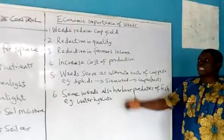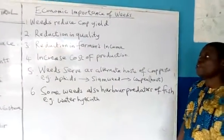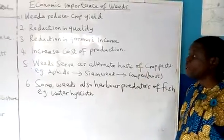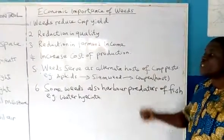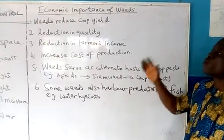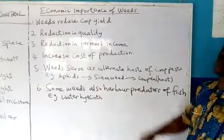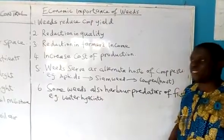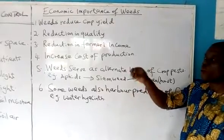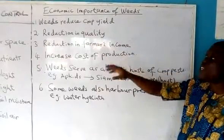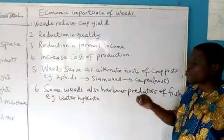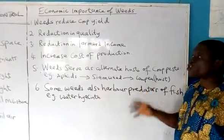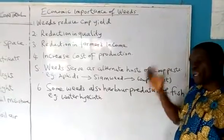Then we have some economic importance of weeds generally — that means both the positive and negative impacts. First, weeds reduce crop yield because they compete for space, nutrients, sunlight, and soil moisture, which invariably affects the yield of the crop. That means the crop does not grow as well as it ought to. Number two: weeds also reduce the quality of crops, in the sense that some of these weeds mix up with the seeds or harvested products of crops and thereby reduce the quality of such a crop. There is also a reduction in the farmer's income, because if yield is affected and quality is affected, it also affects what the farmer gets from the sales of such crops.